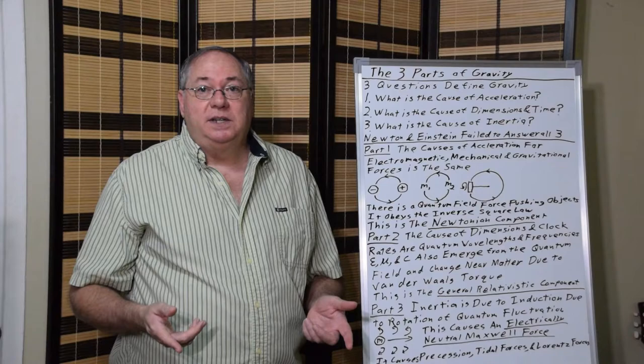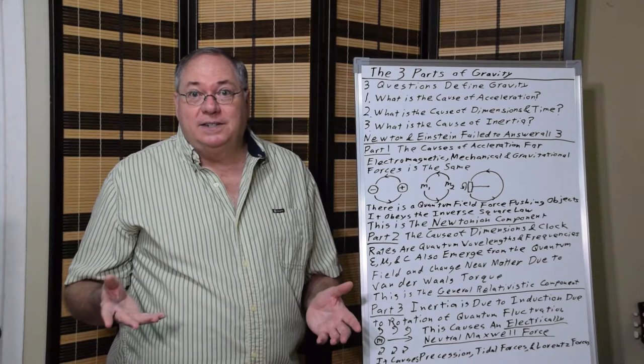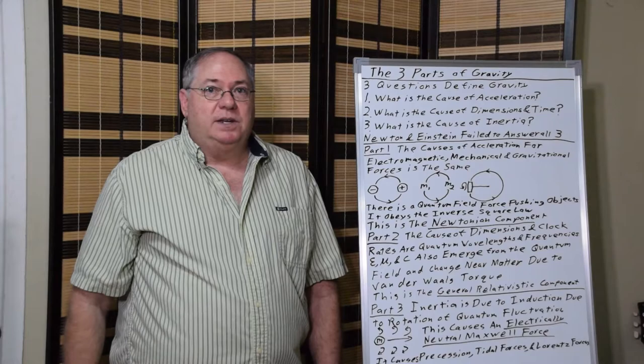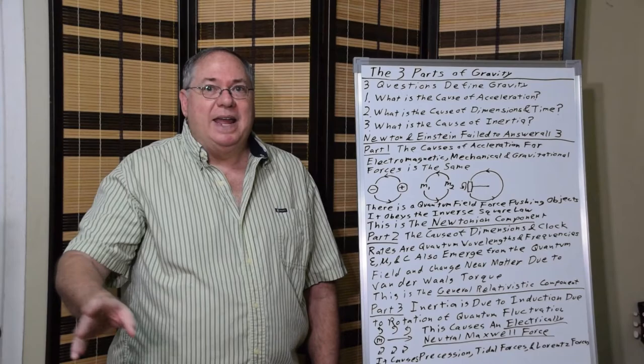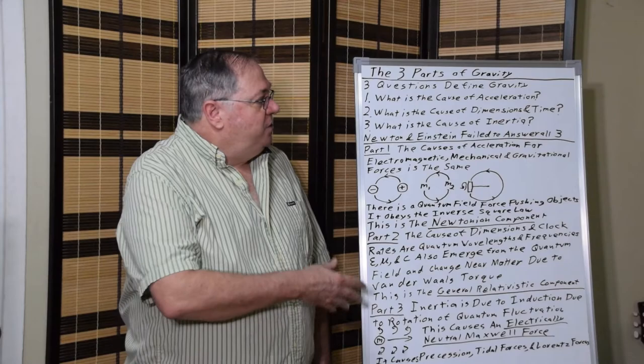But it also explains tidal force interactions. And it explains the Lorentz force, which gives you an additional attraction that explains the shape of spiral galaxies and accounts for much of the dark matter problem. Once you have this Maxwell force, you fix the dark matter problem to a large degree. There's still other forms of matter we can't see, but this accounts for the mathematical error that we see in spiral galaxies, for example.